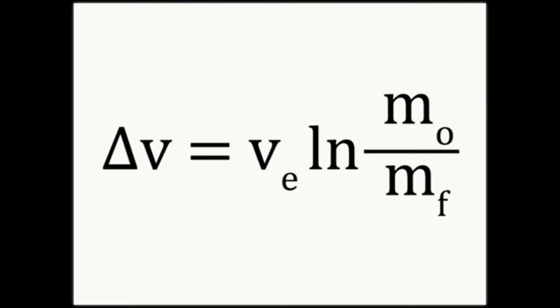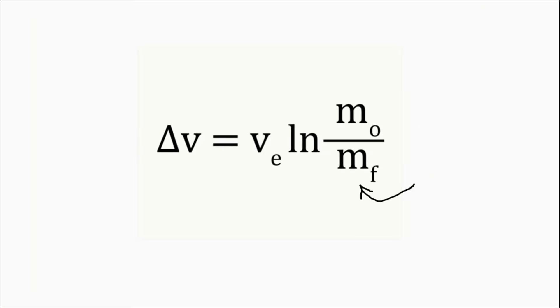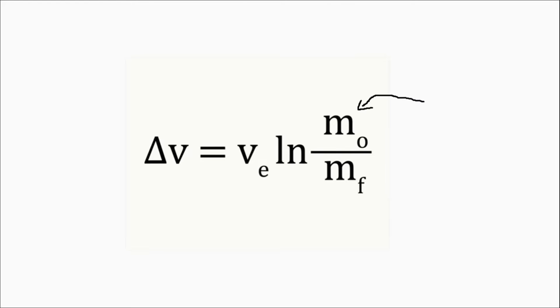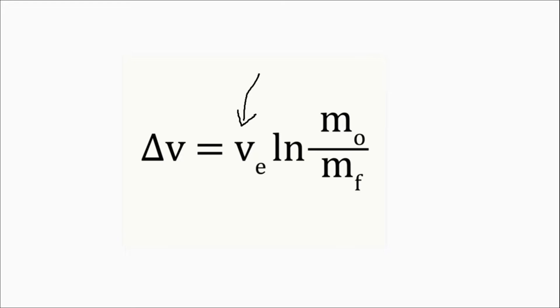First I want to go over what some of these symbols mean. We've got MF, which is mass final, which is the mass of the rocket when it doesn't have any fuel in it. Then we've got MO, which is M original, and that's the mass of the fuel plus the mass of the rocket.